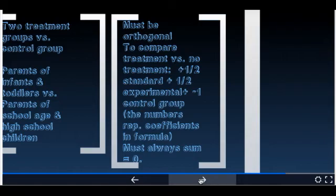What that means is that you can't have two treatment groups versus the same treatment group and control group. You can't have parents of infants and toddlers versus parents of infants in high school. You can't have infants on both sides. You can't have the same treatment group on both sides. So if that's the case, you're going to have to re-fix that.